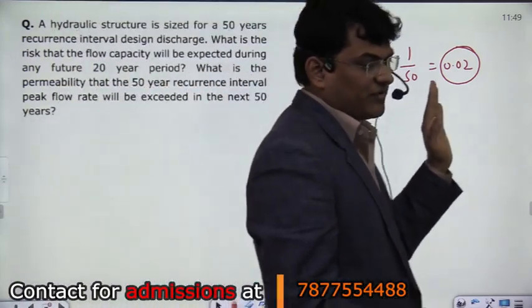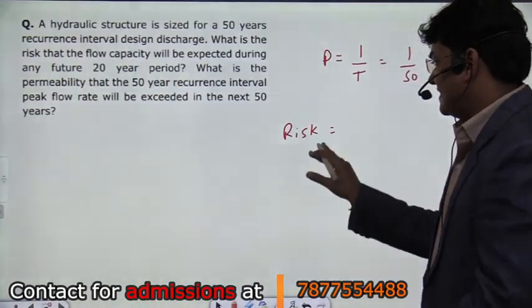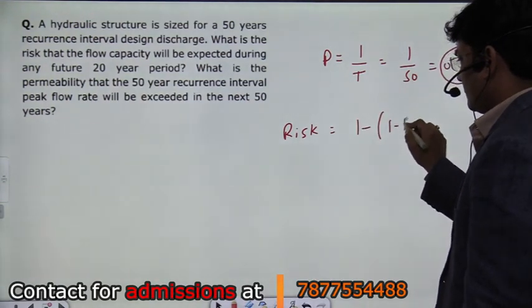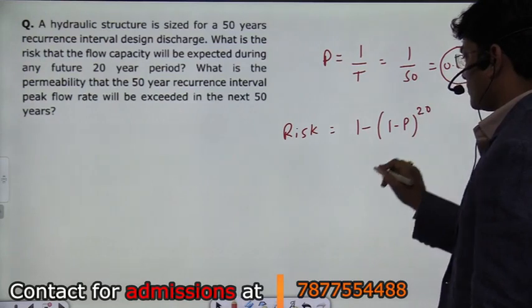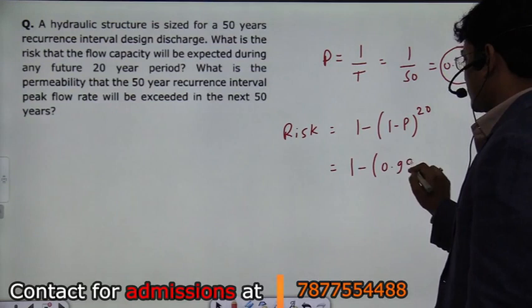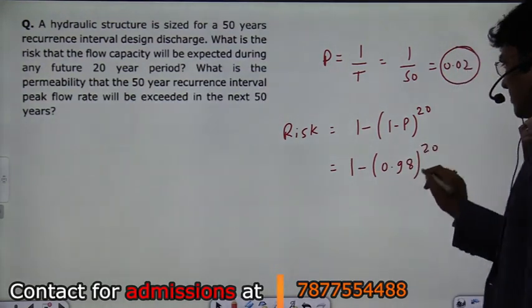It means the structure you are building will fail. The risk is calculated as 1 minus P raised to the power N, which is 20.